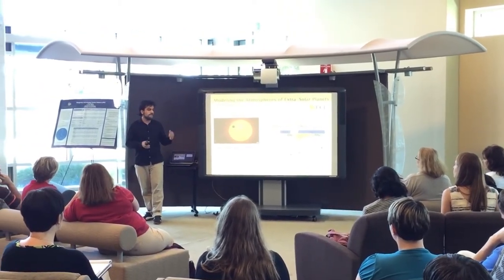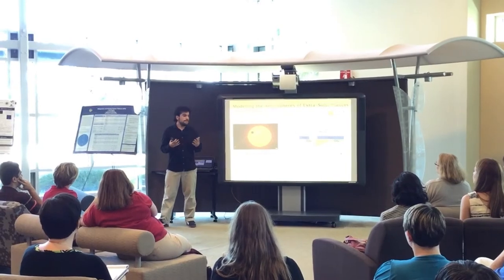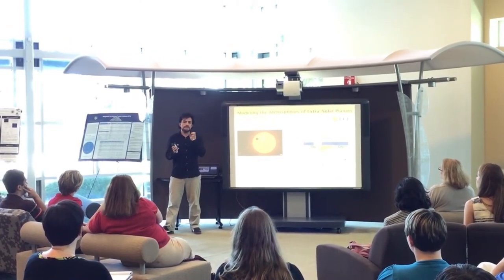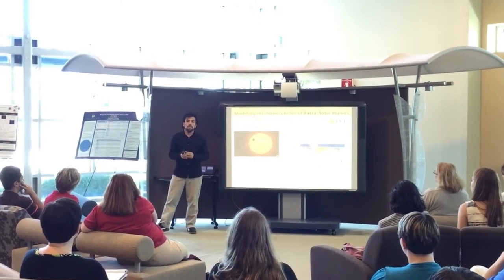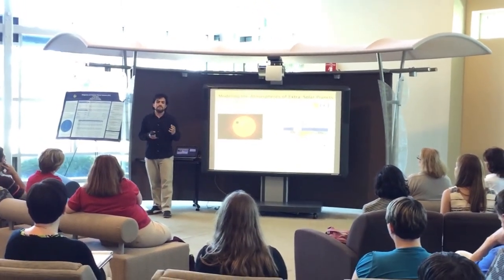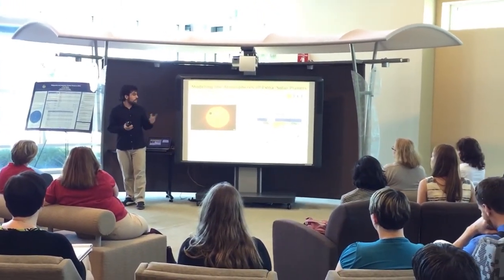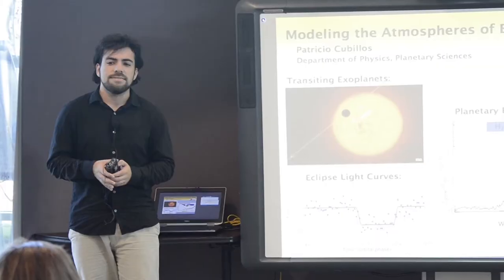So in summary, by measuring the relative differences of the planetary emission at different wavelengths, we can probe what are the temperatures and what are the molecules present in the atmospheres of extrasolar planets.